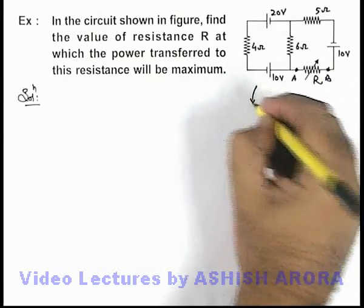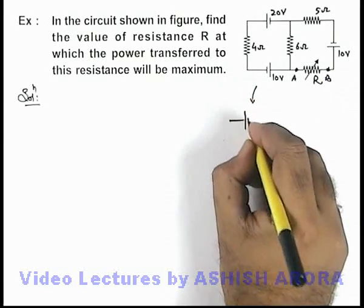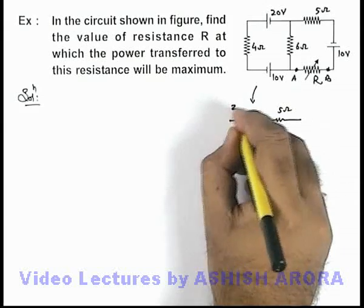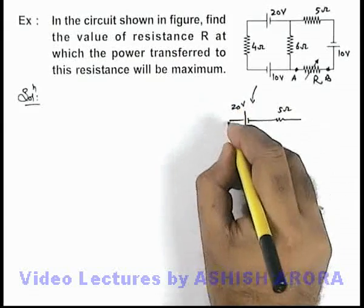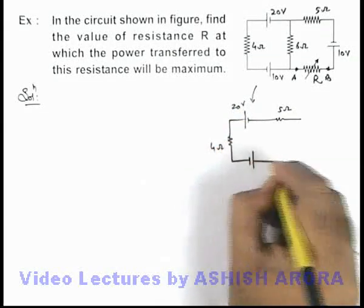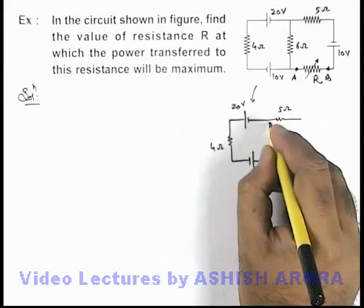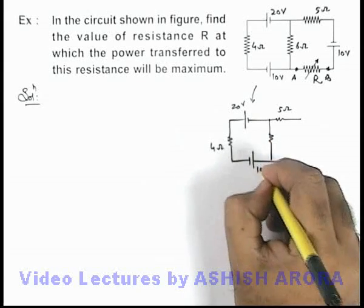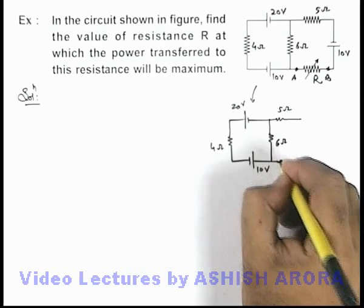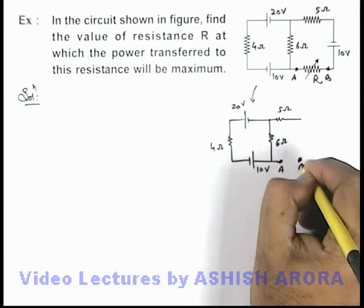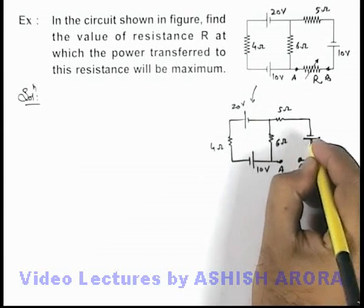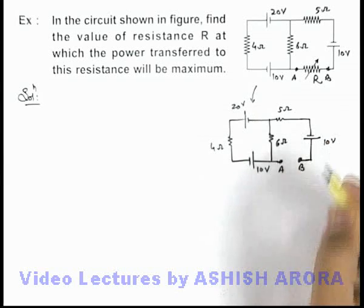If we just redraw the circuit it will look like this: there is a 5 ohm resistance, a 20 volt source, a 4 ohm resistance, a 10 volt battery, a 6 ohm resistance, and terminal A. We have removed the variable resistance R, and here a 10 volt battery is connected.